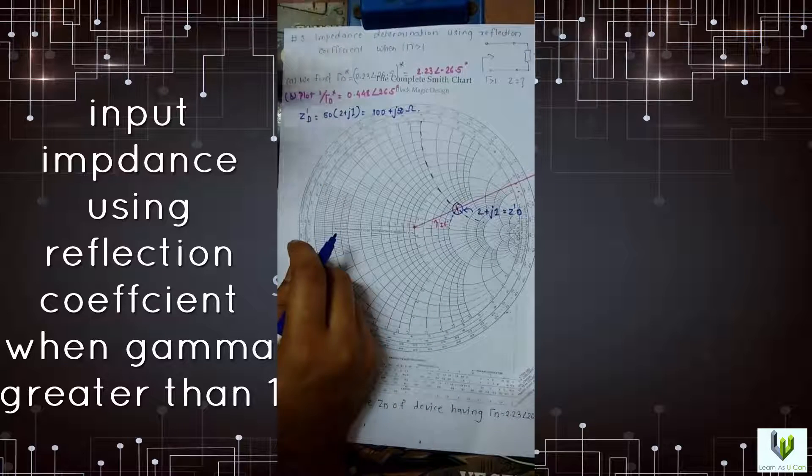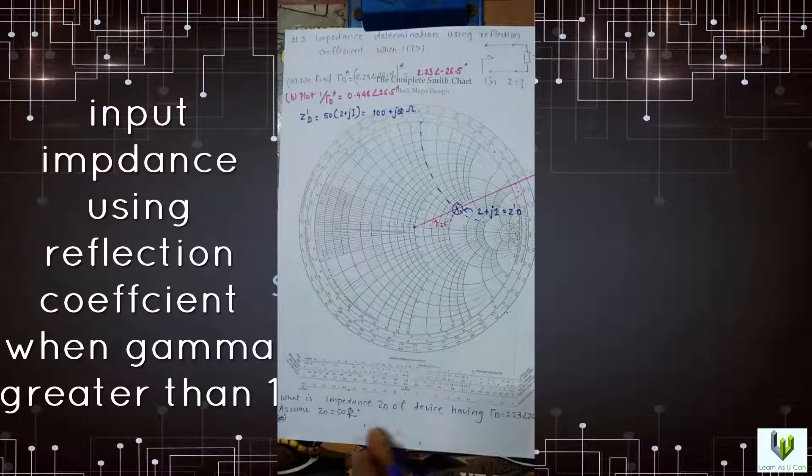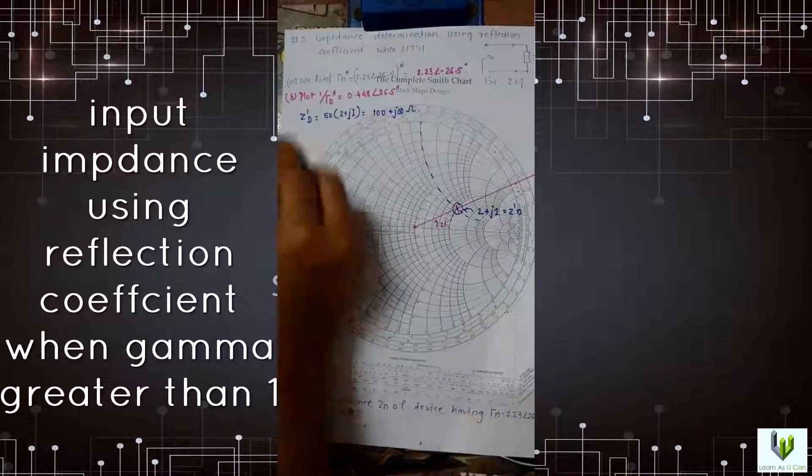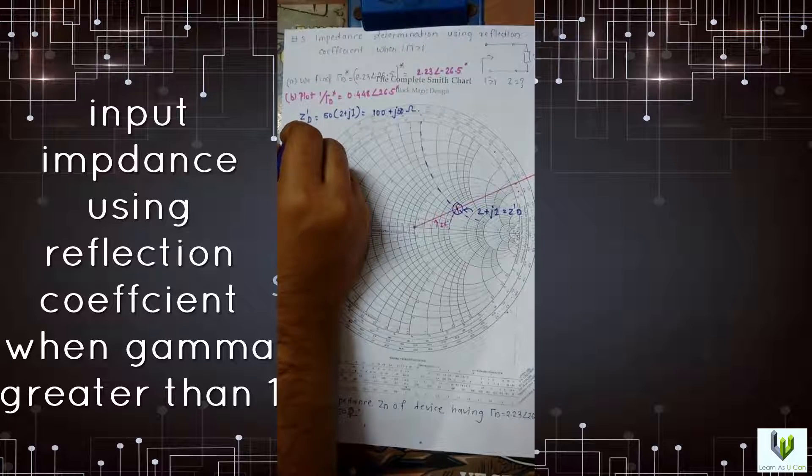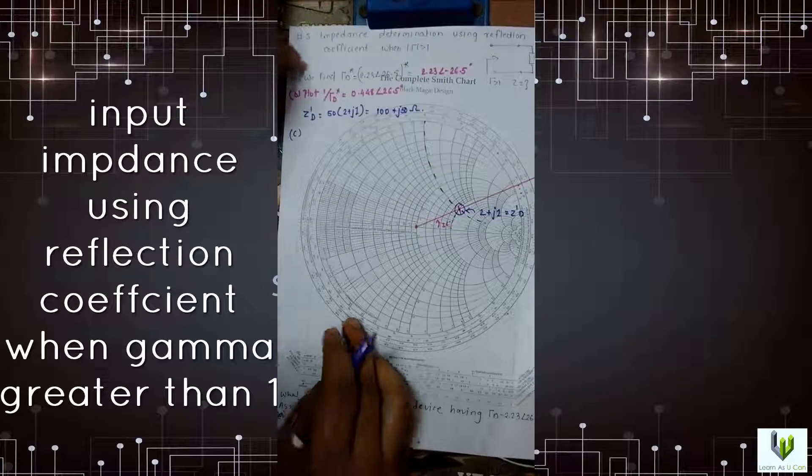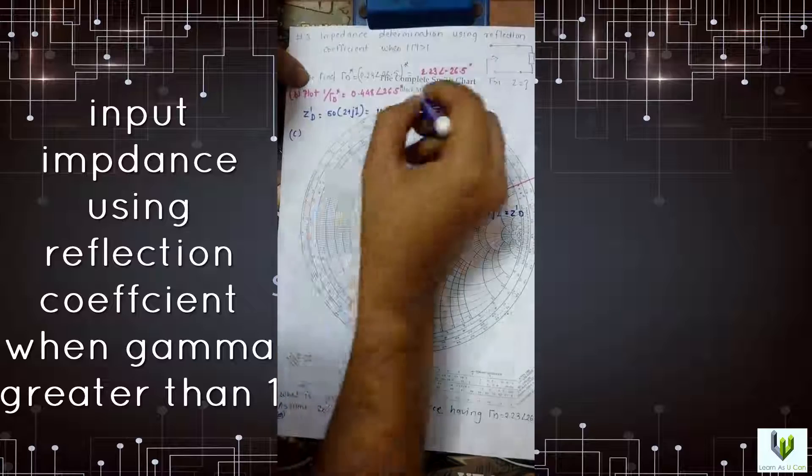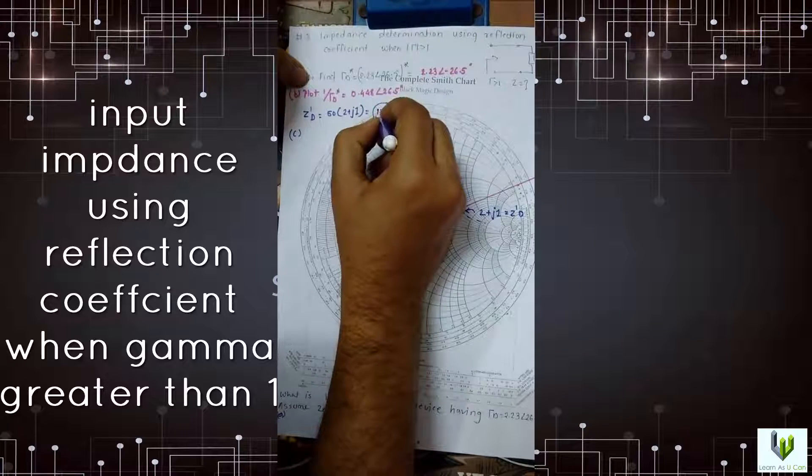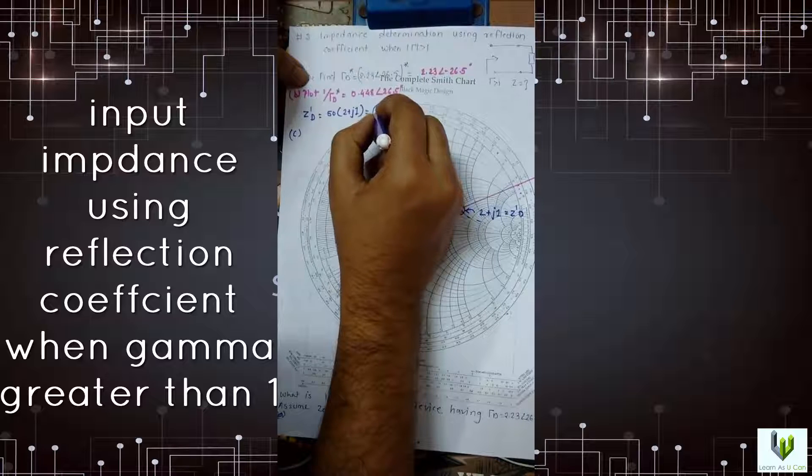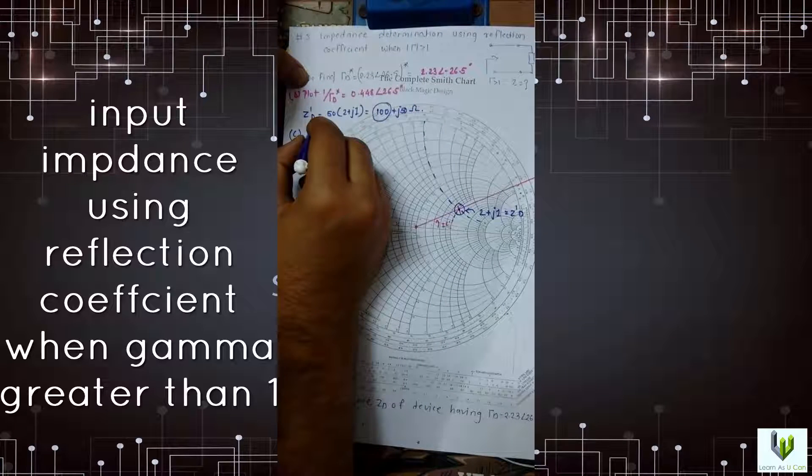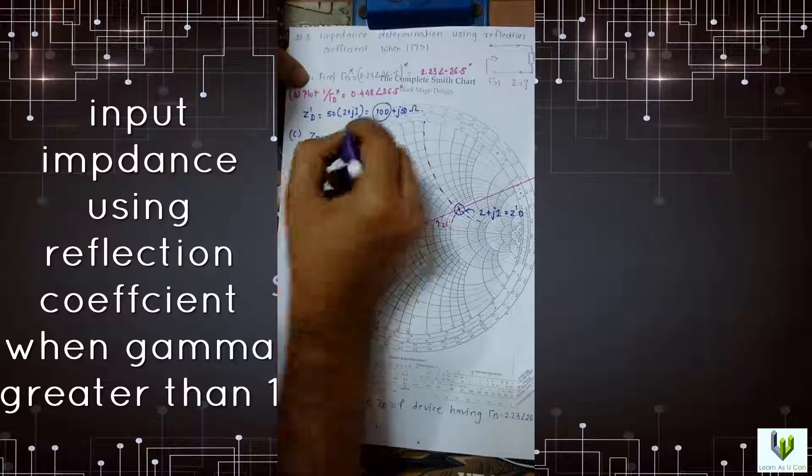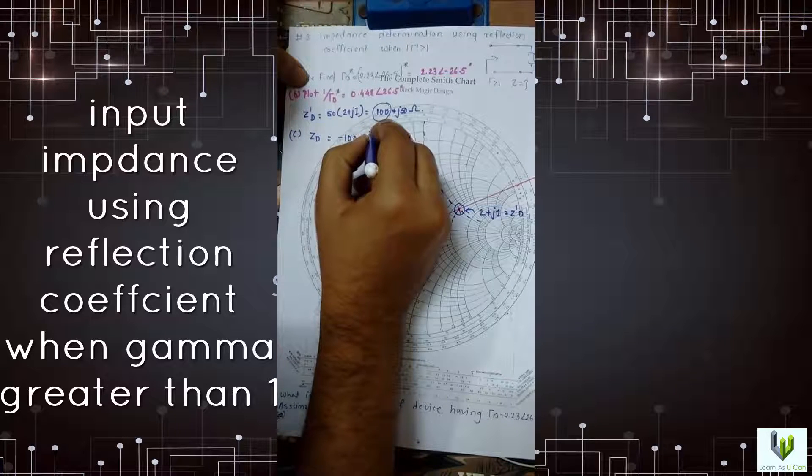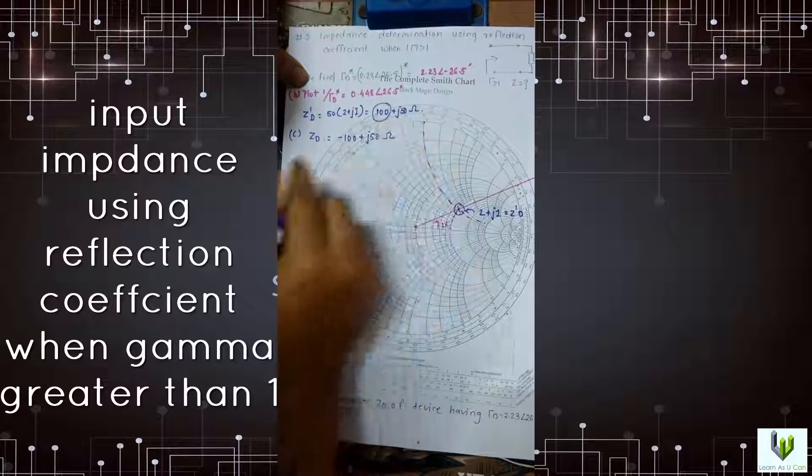We have to find the ZD value. What is the impedance of the device? So last step is just convert this sign positive to negative. You get this ZD value is minus 100 plus j50. This is the required answer.